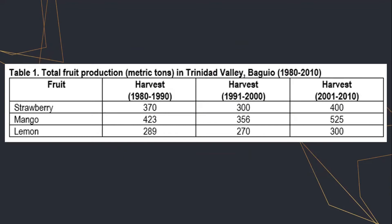this is a table: Total fruit production in metric tons in Trinidad Valley, Baguio. This table shows the harvest of the fruits, particularly in Trinidad Valley, Baguio, from 1980 to 2010.